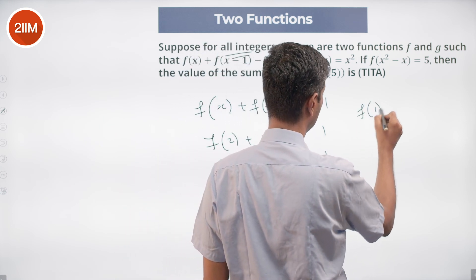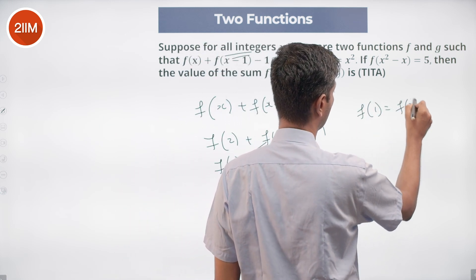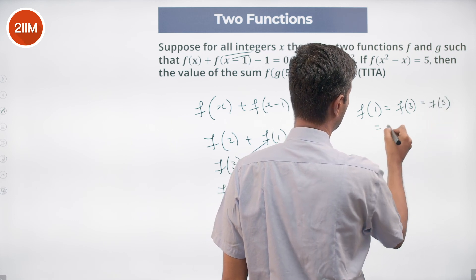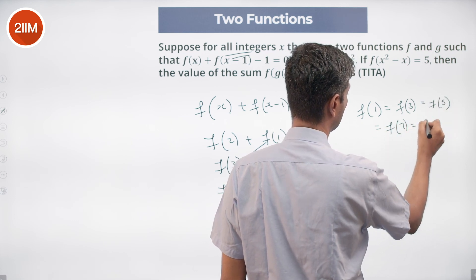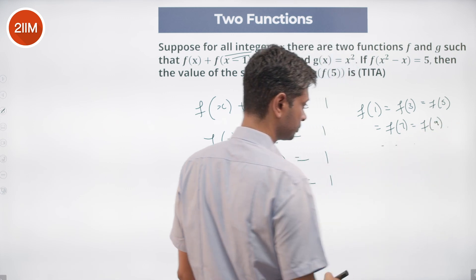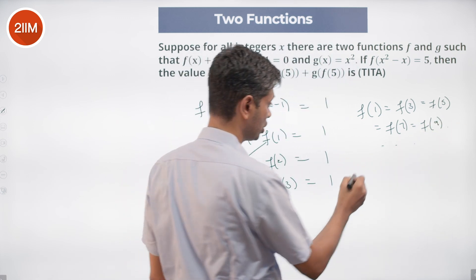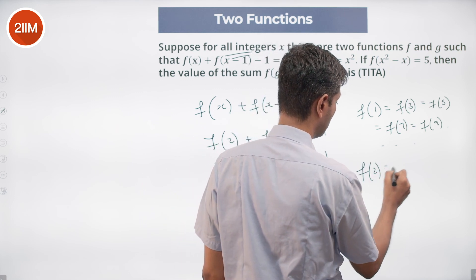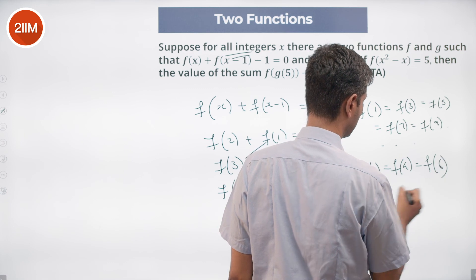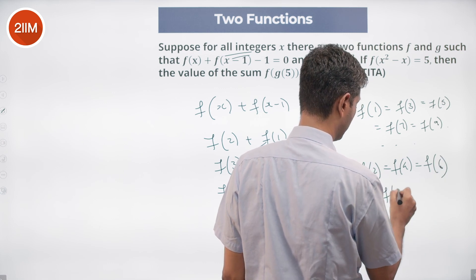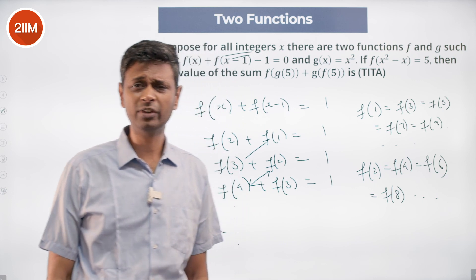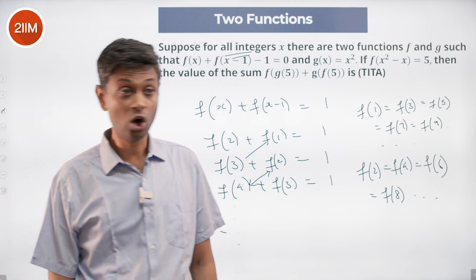f(1) = f(3) = f(5) = f(7) = f(9) = ... and similarly f(2) = f(4) = f(6) = f(8) = ... So f of any even number is the same value, and f of any odd number is the same value.